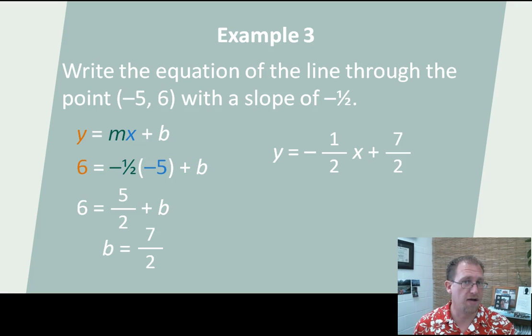I'm solving for the y-intercept, right? So I'm going to go through here and solve for b. And I get that b equals 7/2. I already have the slope. So now I can express this line in standard slope-intercept form: y = -1/2x + 7/2. It's another way to create the slope-intercept formula. Moving on.